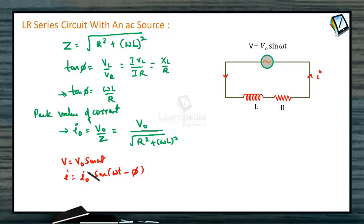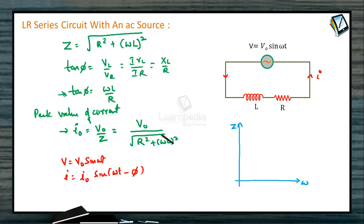We can also see how impedance varies with respect to ω. Z = √(R² + (ωL)²). Starting with the value R when frequency is zero, Z goes on increasing as the value of frequency increases.